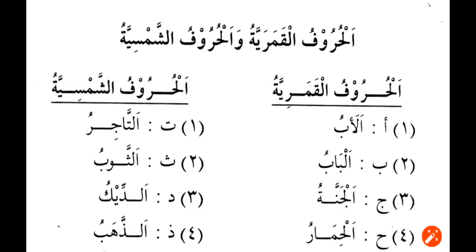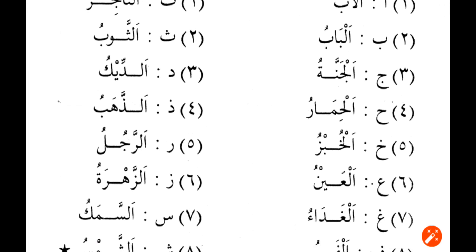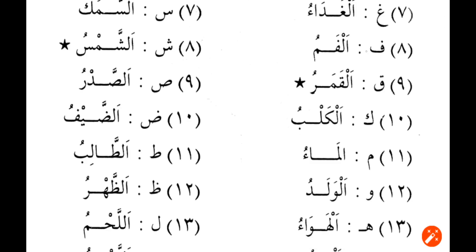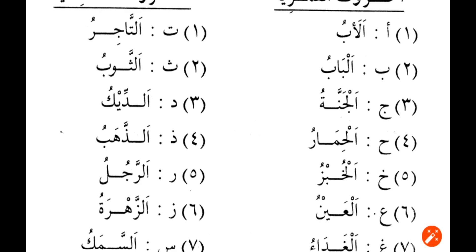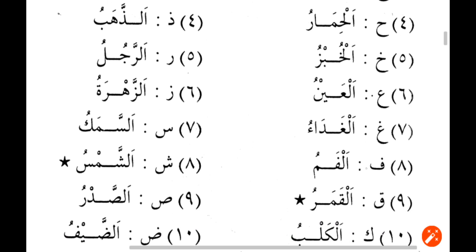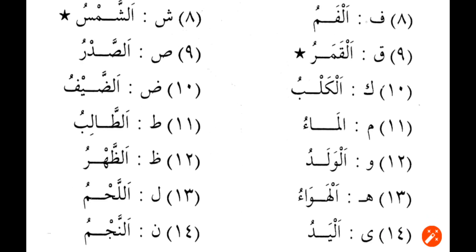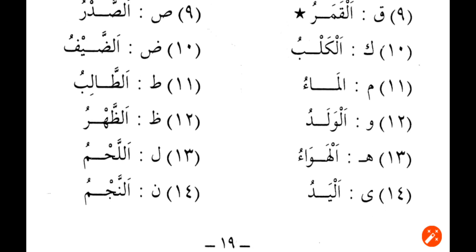Examples of Al-Uruful Kamariyat: Al-Abu, Al-Baab, Al-Jannatu, Al-Himaru, Al-Khubz, Al-Ainu, Al-Kadahu, Al-Famu, Al-Kamaru, Al-Kalb, Al-Ma'u, Al-Walad, Al-Hawa, Al-Yad. Examples of Al-Uruful Shamsiyat: At-Tajiru, At-Tawgu, Ad-Deequ, Ad-Dahab, Ar-Rajulu, Az-Zahratu, Ash-Shamak, Ash-Shamsu, Ash-Shadru, Az-Zaifu, At-Twalibu, Az-Zahru, Al-Lahmu, An-Najmu. Notice that all the words in Al-Uruful Shamsiyat carry a Shadda after the Lam, but the Lam is not pronounced, whereas in Al-Uruful Kamariyat there is no Shadda and the Lam is pronounced.